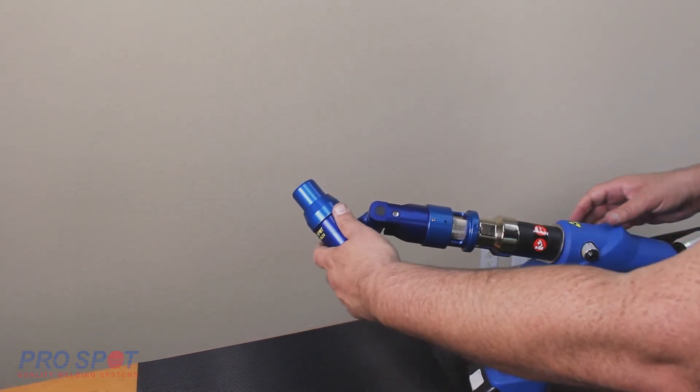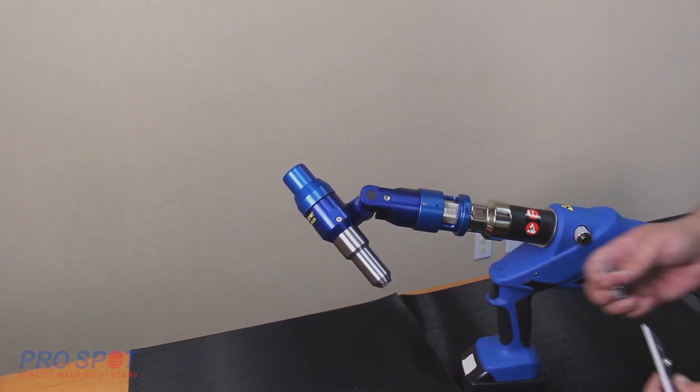The blind rivet adapter pivots into a variety of angles to access even the most difficult to reach areas.